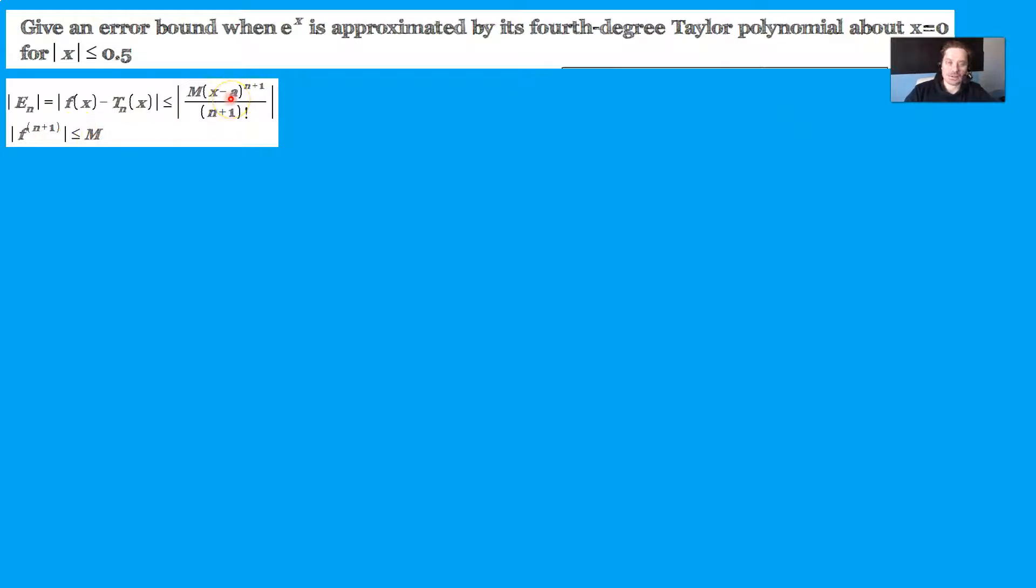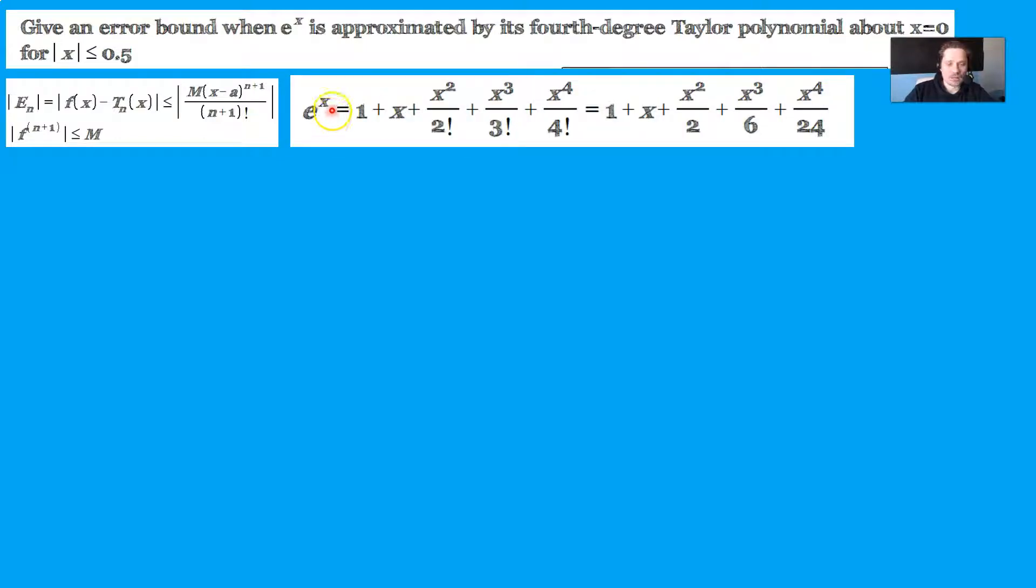How does that apply here? Well that applies here as follows friends, take a look. e to the x, when you expand it, is 1 plus x plus x squared over 2 factorial plus x cubed over 3 factorial plus x to the 4th over 4 factorial, which is then 1 plus x plus x squared over 2 plus x cubed over 6, all the way to x to the 4th over 24. That's expansion, using a 4th degree quantity, your polynomial.